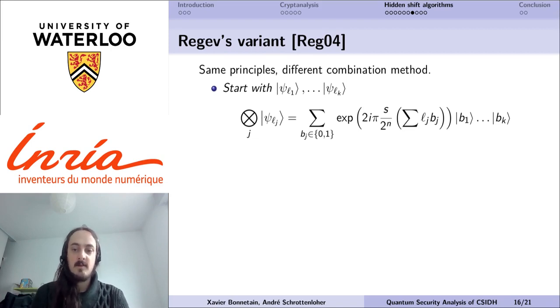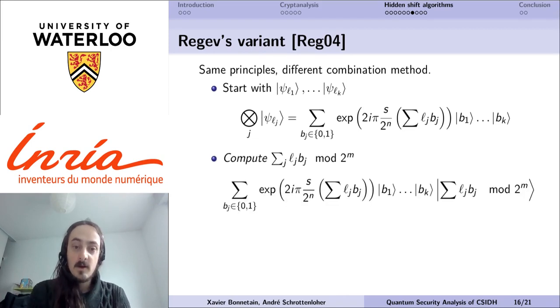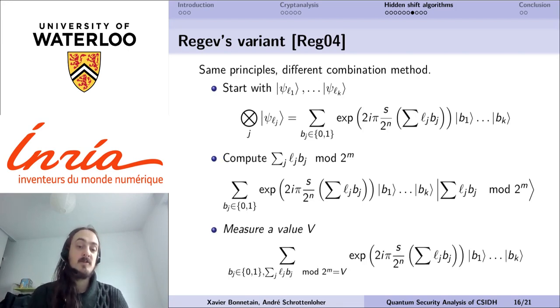Then we compute the value of the phase shift modulo a power of 2 for each of the components of the superposition. Once we've done that, we measure the value we've just computed, and this will project the superposition of 2 to the k values to the subset of values whose phase modulo 2 to the m will be equal to the thing we've just measured.